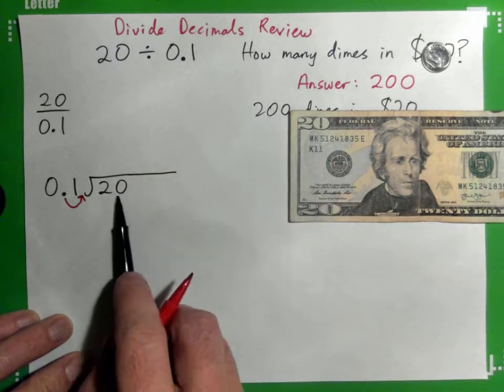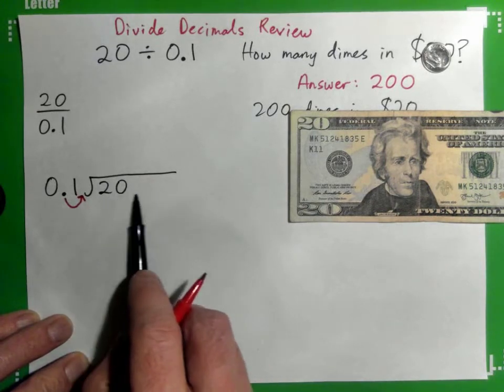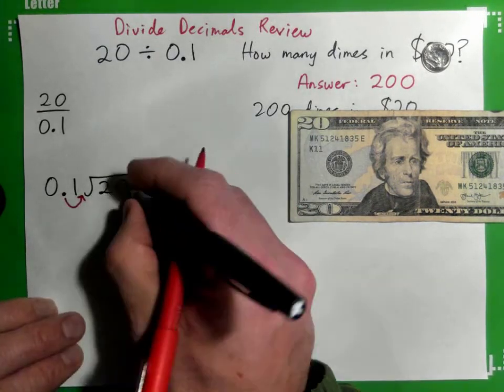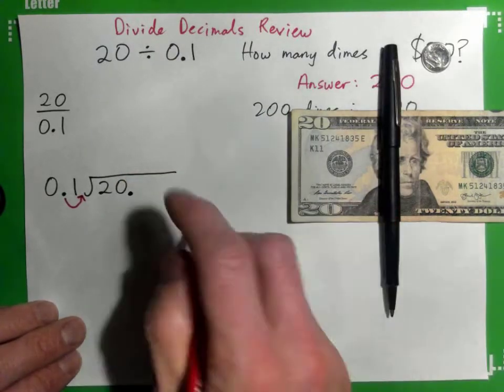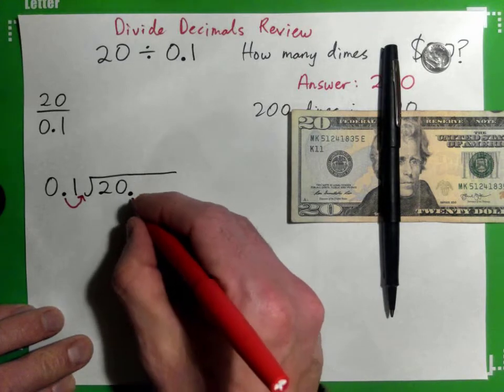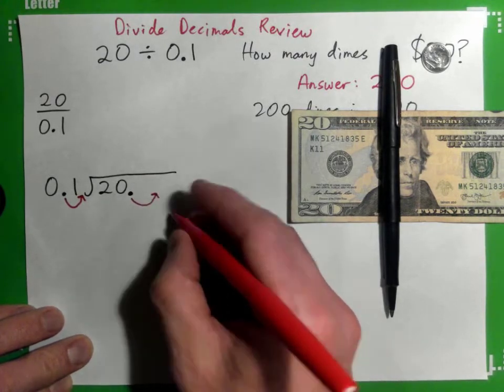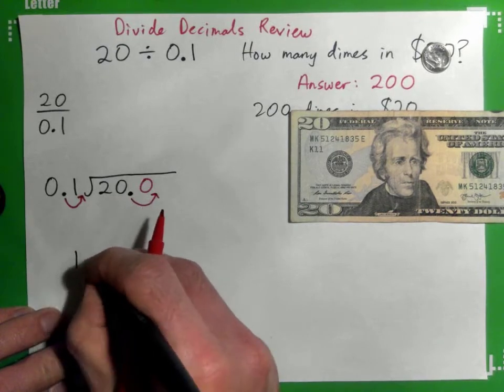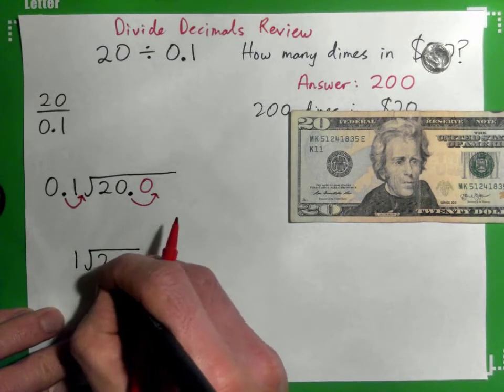Where is the decimal point for our $20? Where is it? After the zero, it's right there. So put a big dot there and I need to move this decimal point to the right also, and I put in a zero. So this becomes 1 into 200.